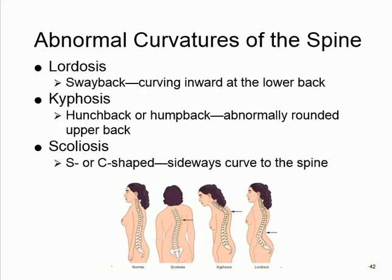Abnormal curvature of the spine: lordosis is an exaggerated inward curve (from 'lords' who walked with their chest out), kyphosis is a forward hunching curve, and scoliosis is a side-to-side curve.